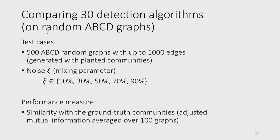We create random graphs — there's a type of random graph called ABCD, developed at Ryerson University in Toronto. These ABCD graphs are random graphs that have ground truth communities built into them. In the generation process, each node has a community assigned to it, and then edges are formed based on communities such that most edges are created between nodes of the same community.